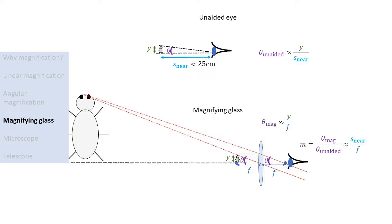At this point, it is useful to consider the difference between angular magnification and linear magnification. If we put the object at the focal point of the lens, the virtual image is formed at infinity and it is infinitely large, so the linear magnification is infinite. But if we look through a magnifying glass, it would be absurd to say that the object looks infinitely large — the object does not look infinitely large because the virtual image is also infinitely far away, so due to perspective it appears finite. Angular magnification properly takes this effect into account, while linear magnification does not.